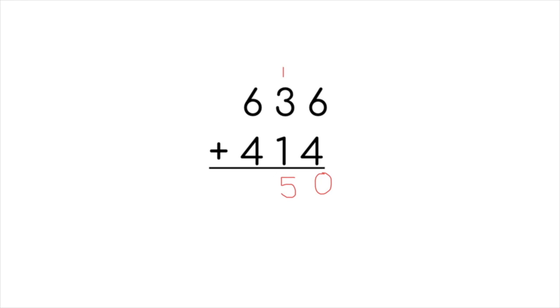Now we can look at our hundreds place. 6 plus 4 is 10. There's nowhere to carry the 1, so you can put the whole 10 down. When you have four digits, you're going to need to add a comma. So we have 1,050 as our final answer.